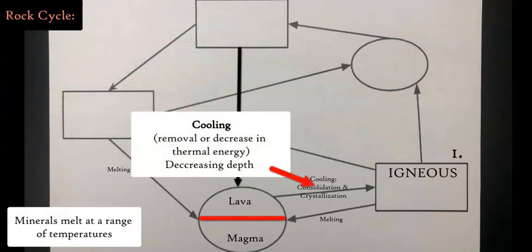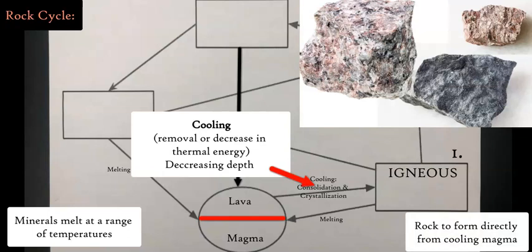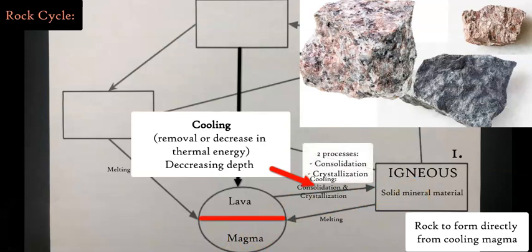If we're going to cool it, we're going to form an igneous rock. When you cool the lava or magma at different speeds, you reduce the thermal energy and go from a liquid to a solid. You're adding two processes: consolidation and crystallization. The latter is the physical form of minerals, and consolidation is the fact of making something solid, which is the igneous rock.